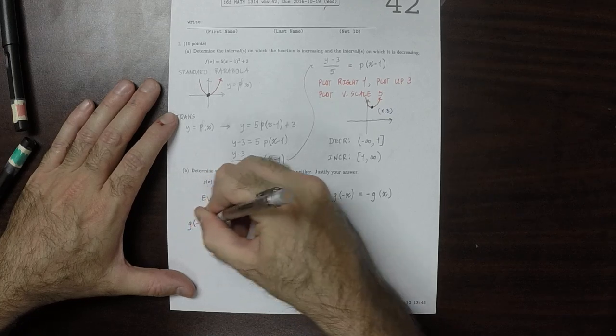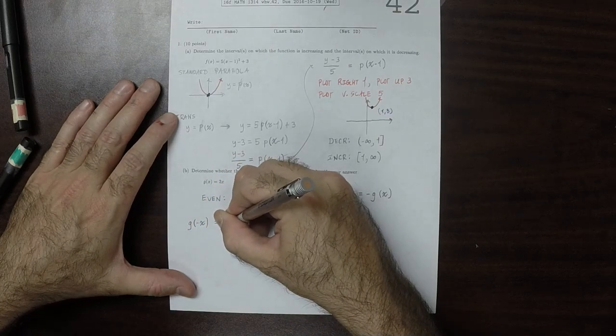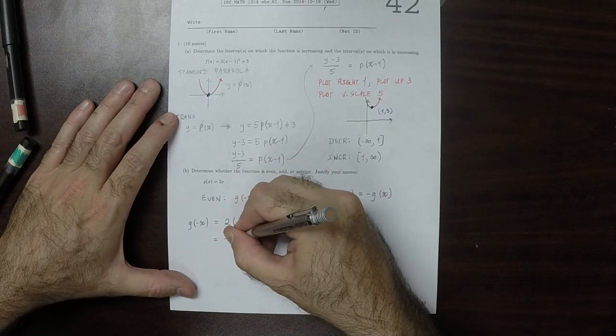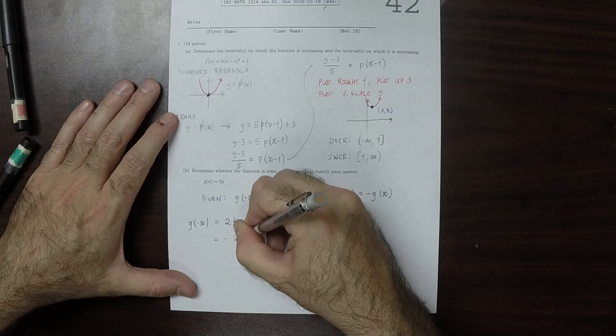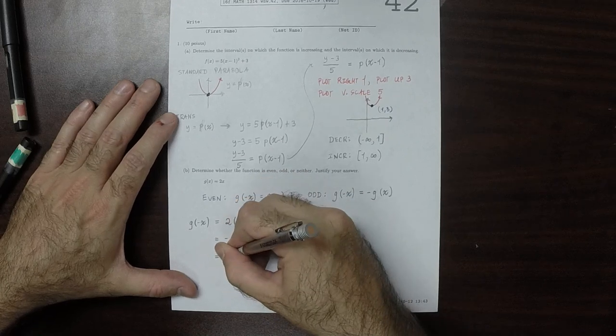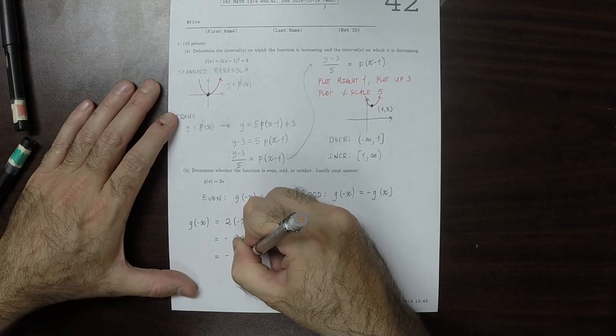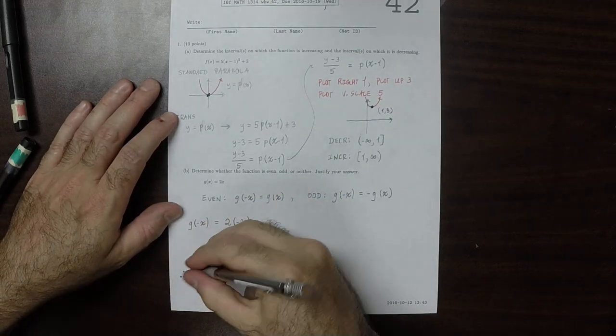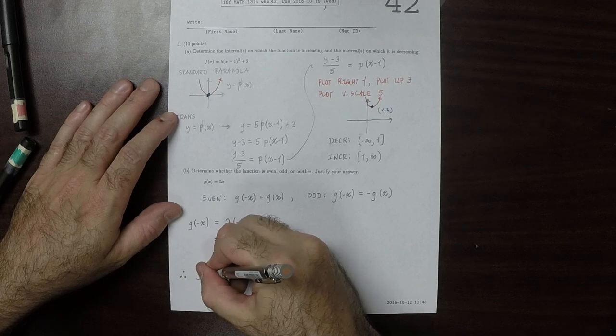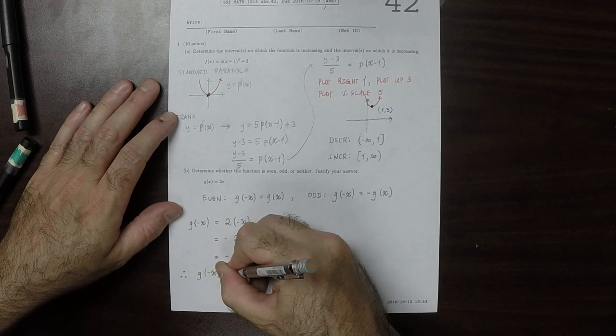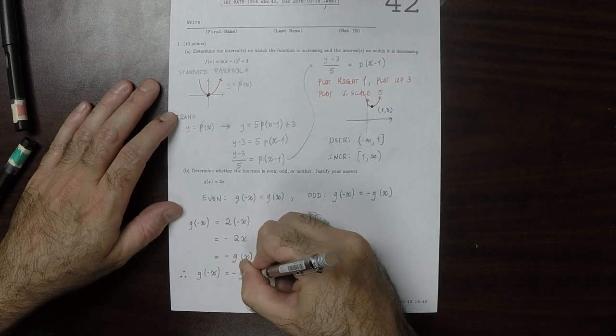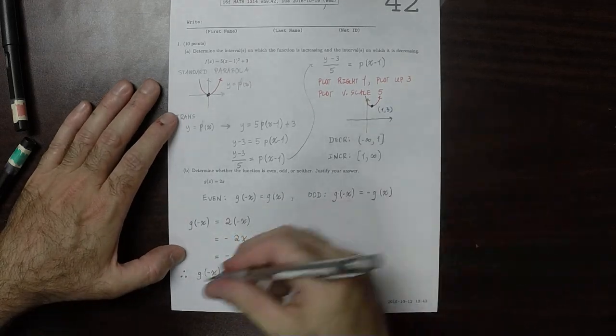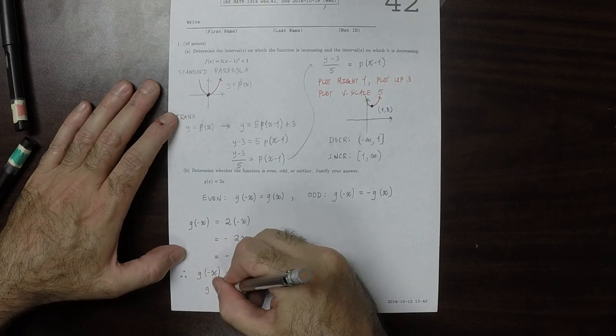Well, g of negative x, that's 2 multiplied by negative x. But that's just negative 2x. So that's negative g of x. Therefore, what we've established is that g of negative x is negative g of x. And therefore, g is odd.